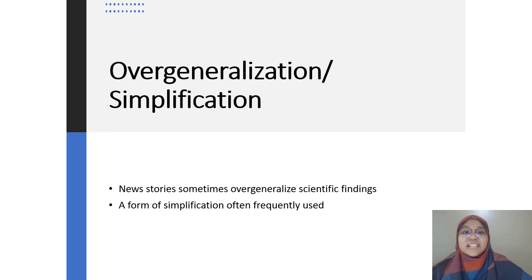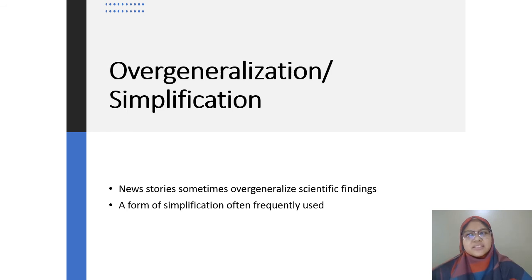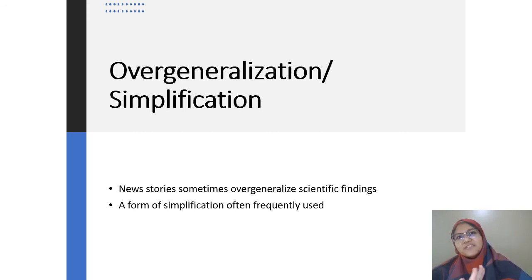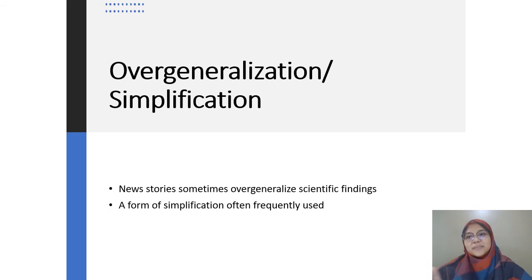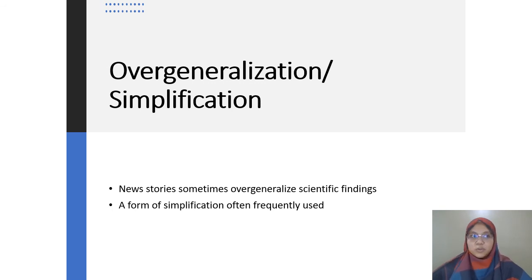Next is overgeneralization or simplification — something very common in science reporting. News often overgeneralizes scientific findings as a form of simplification. If you're a good science student, you won't use overgeneralization; you'll say 'due to certain circumstances,' 'due to certain factors,' 'most of the time,' or 'sometimes' — uncertain language — because you know that overgeneralization doesn't reflect what actually happens in real life.